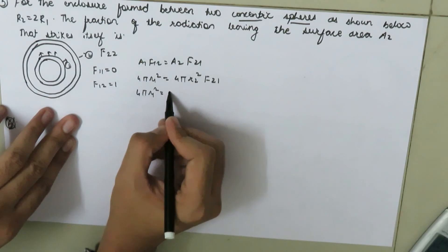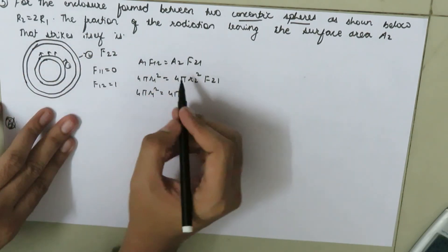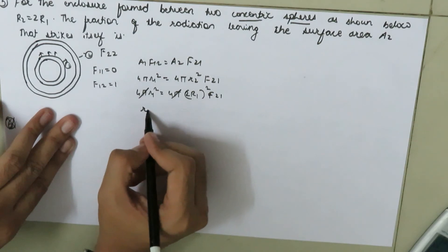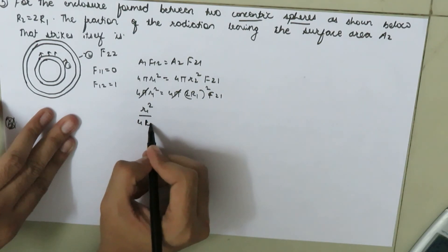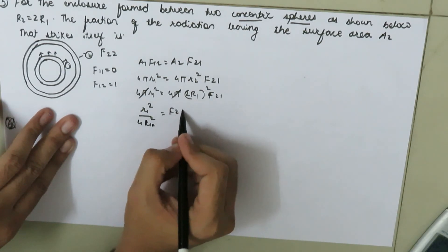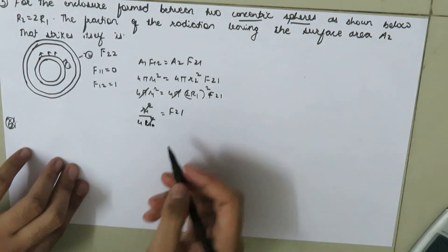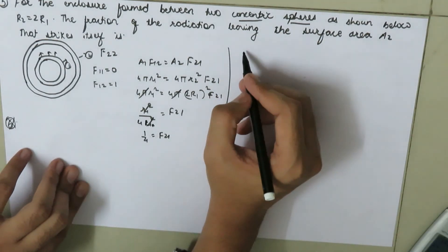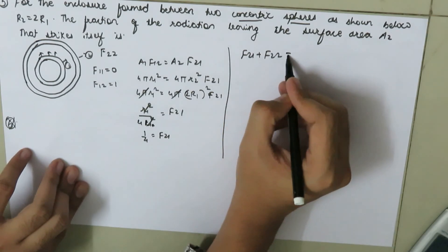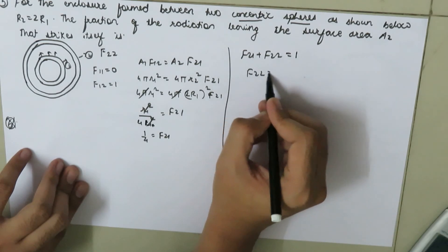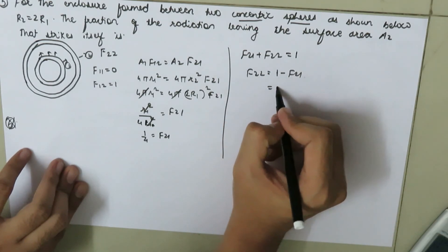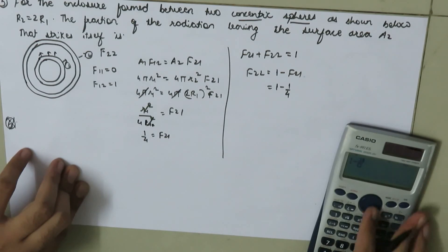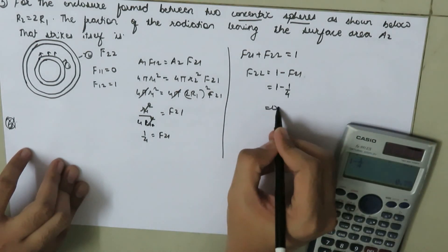Solving: 4πR₁² = 4π(2R₁)² × F₂₁, so R₁² = 4R₁² × F₂₁, giving F₂₁ = 1/4. Now applying the summation rule: F₂₁ + F₂₂ = 1, so F₂₂ = 1 − 1/4 = 0.75.